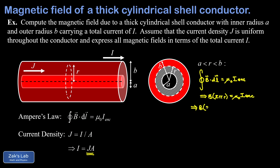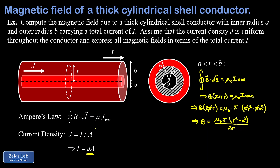On the left we have B times 2πr, and on the right we have μ₀ times I_enclosed, which equals the current density j times the cross-sectional area of conductor inside the Amperian loop. That area is an annulus with outer radius r and inner radius a, so we take πr² minus πa². Solving for B and factoring π out of the right-hand side to cancel with the one on the left, we get B = μ₀j(r² − a²) / (2r). We're still not done because we need B in terms of total current I, not current density j.